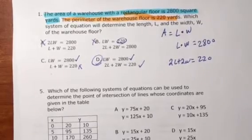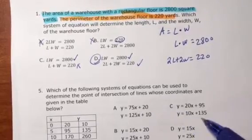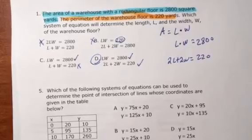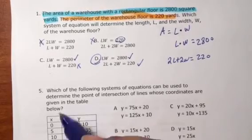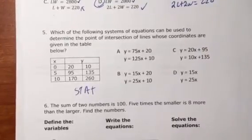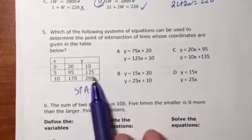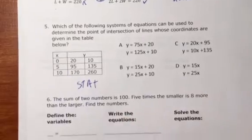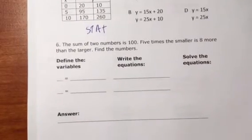That's number one. Number two, I'm just going to remind you that this is a stat question. Number five, you're creating two different tables. Let's look at number six.